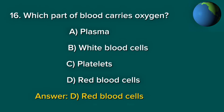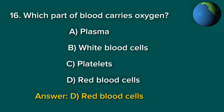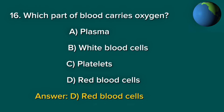Question 16. Which part of blood carries oxygen? A. Plasma. B. White blood cells. C. Platelets. D. Red blood cells. Answer: D. Red blood cells.